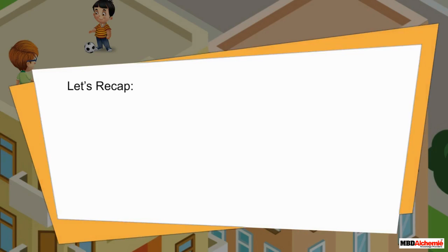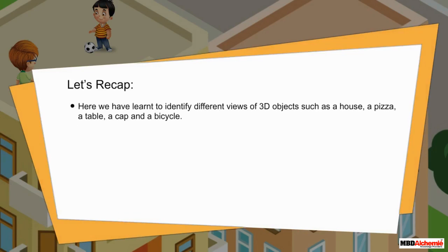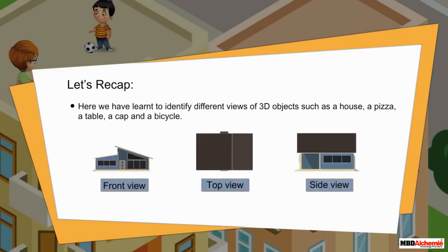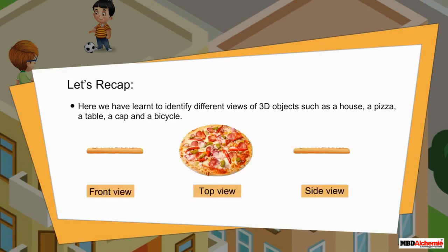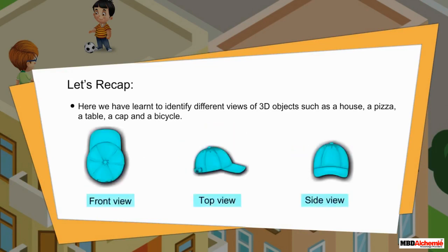Let's recap. Here we have learned to identify different views of 3D objects, such as a house, a pizza, a cap, and a bicycle.